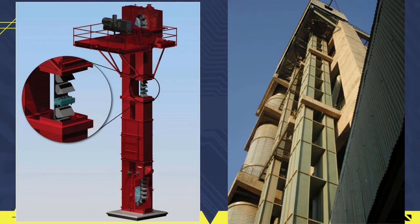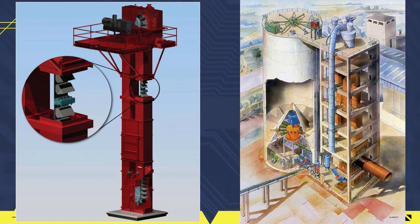The bucket elevator is a tool that serves to transport material vertically. In the raw material milling process, the bucket elevator is used to transport the external tailings material from the vertical roller mill and to transport the raw meal products to the silo.